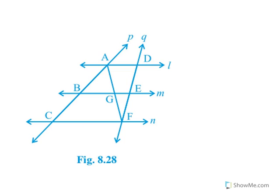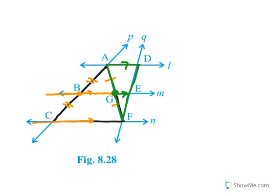To summarize: we took triangle ACF and used the converse midpoint theorem. One midpoint B was given because AB equals BC, and a parallel line was given, so we proved G is the midpoint of AF. Then we took triangle AFD, used G as the midpoint and another parallel line, and proved E is the midpoint of DF. Since E is the midpoint, DE equals EF.